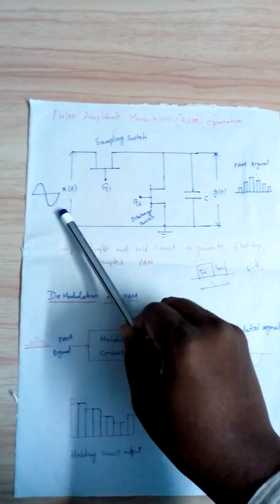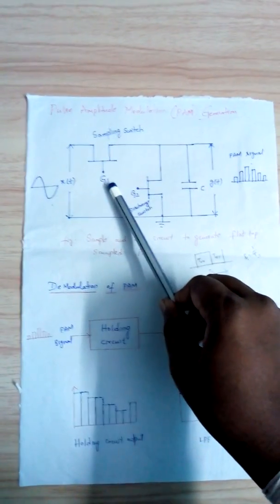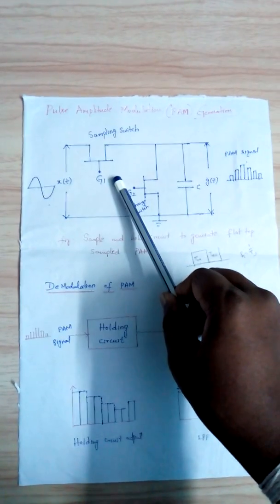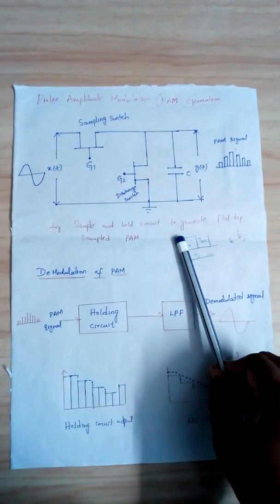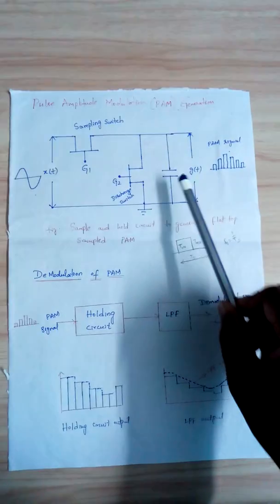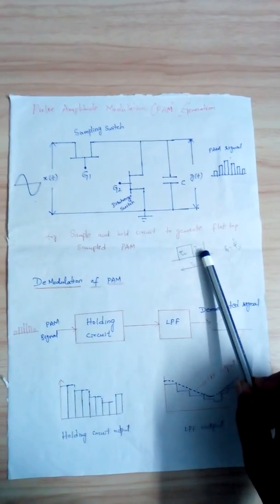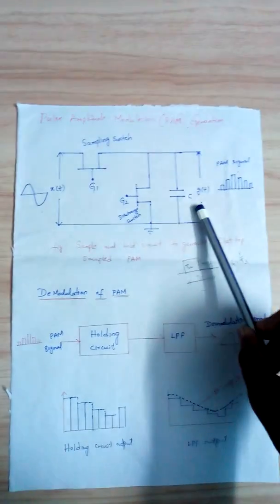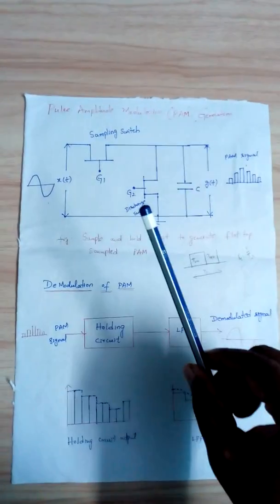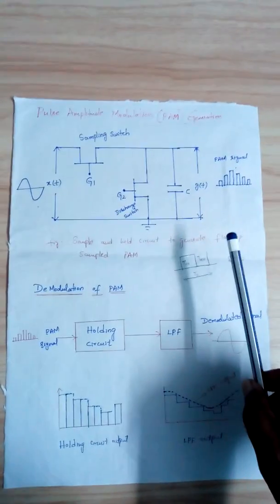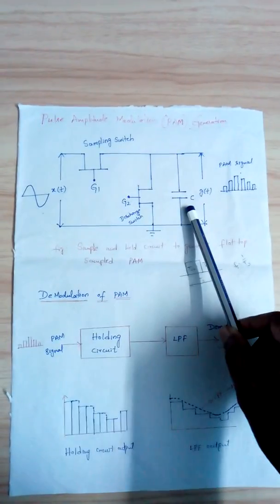To summarize the operation: the input signal X(t) is given to the sampling switch, which samples it at time interval T_S containing T_on and T_off. During T_on the capacitor charges to the instantaneous value of the input signal; during T_off it discharges through the discharge switch. The capacitor holds the signal value for T_S seconds until the next sample arrives, and this process repeats to produce the PAM output signal.